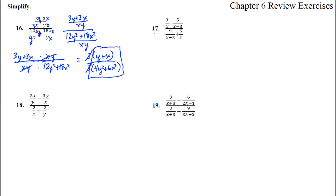Number 17. On this one, we've got a common denominator on the top of x and x minus 3. We times by x minus 3 and x minus 3 here, and here we'd have to times by an x and an x. So that would give us 3x minus 9 — that's the 3 times that — and then minus 5x, all over x times x minus 3.